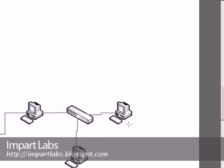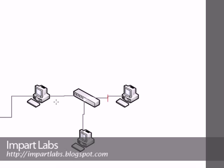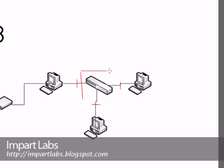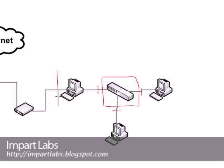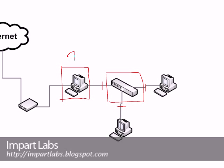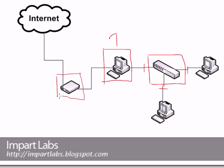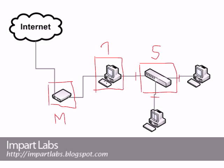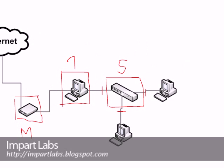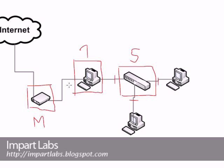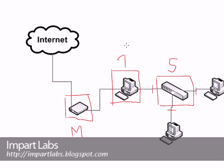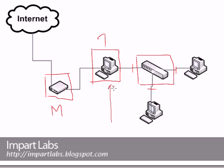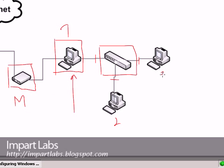If you have more than two computers — for instance three — you won't be using a crossover cable. These cables are known as Ethernet cables, Category 5, and they all connect to a third-party device such as a switch. One of the computers in the network connects to a modem, which dials up to the internet. By sharing that internet connection, Client 2 and Client 3 are also able to connect to the dial-up internet.